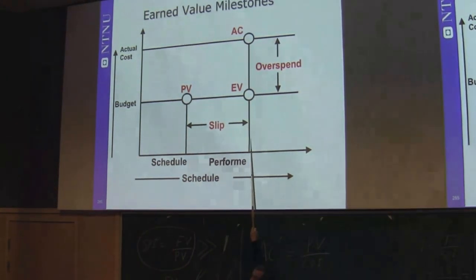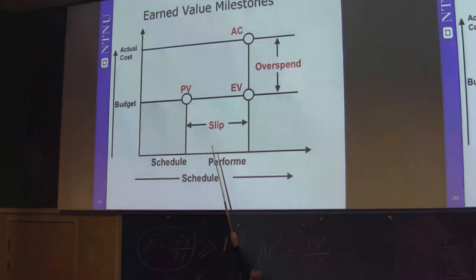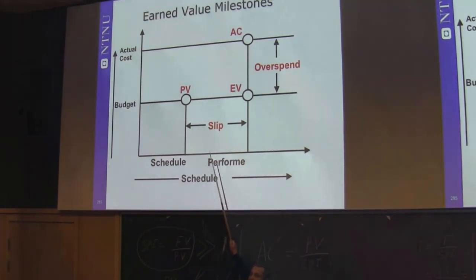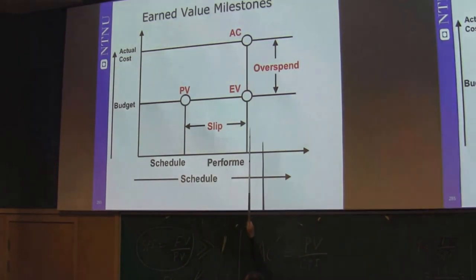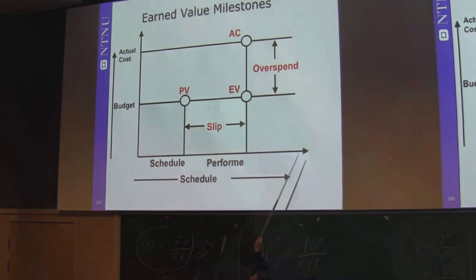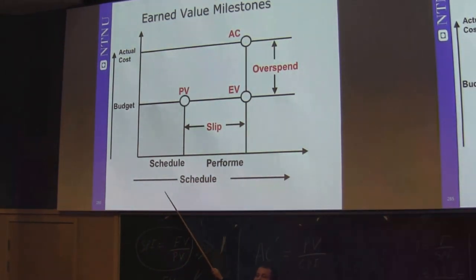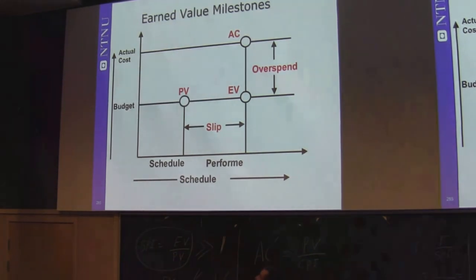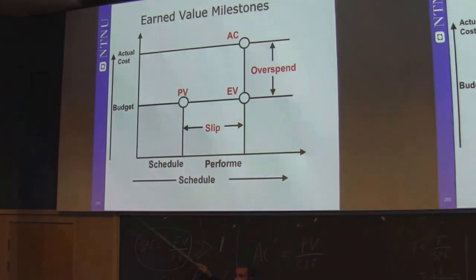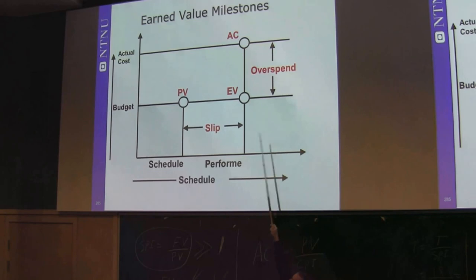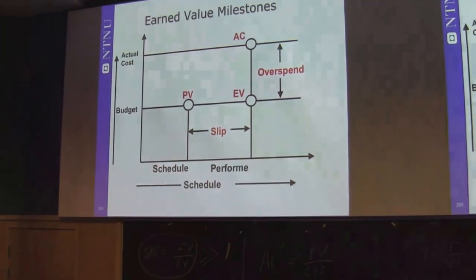We wait until we actually produce it — we assume a delay — and we produce it at a later point in time. We can only produce exactly the planned value, no more or less, because we must produce that exact amount. Then we ask how much money we actually used — that is the actual value. When dealing with earned value milestones, we don't need the SPI because the time delay is already directly given in days or weeks.